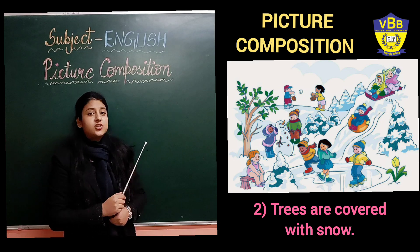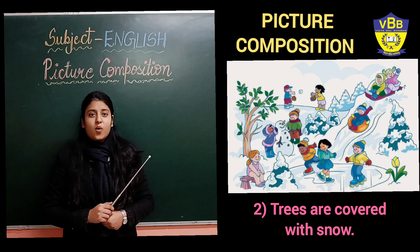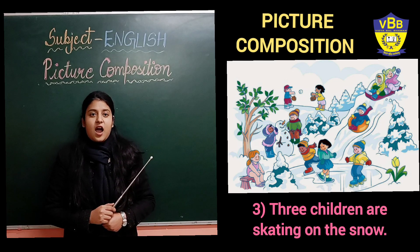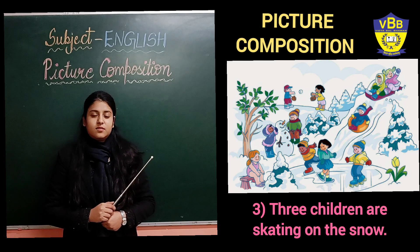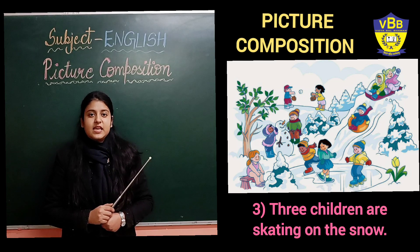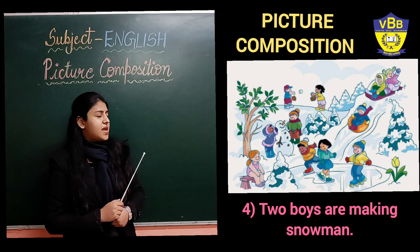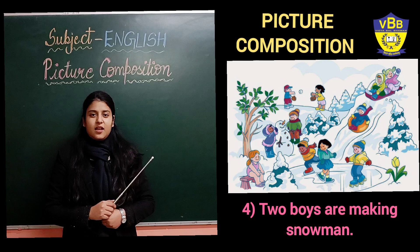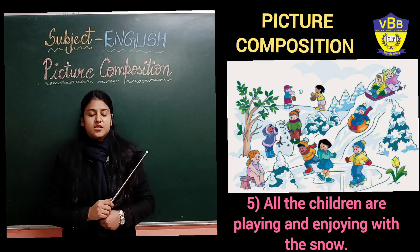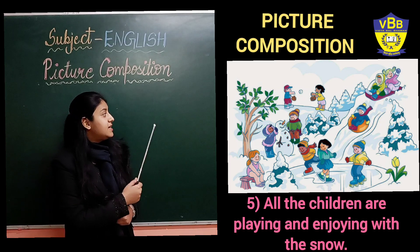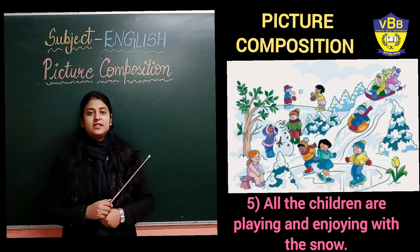Tell me now how many children are playing with the snow. Three children are skating on the snow. The fourth sentence is: Two boys are making snowmen. The fifth sentence is: All the children are playing and enjoying in the snow.